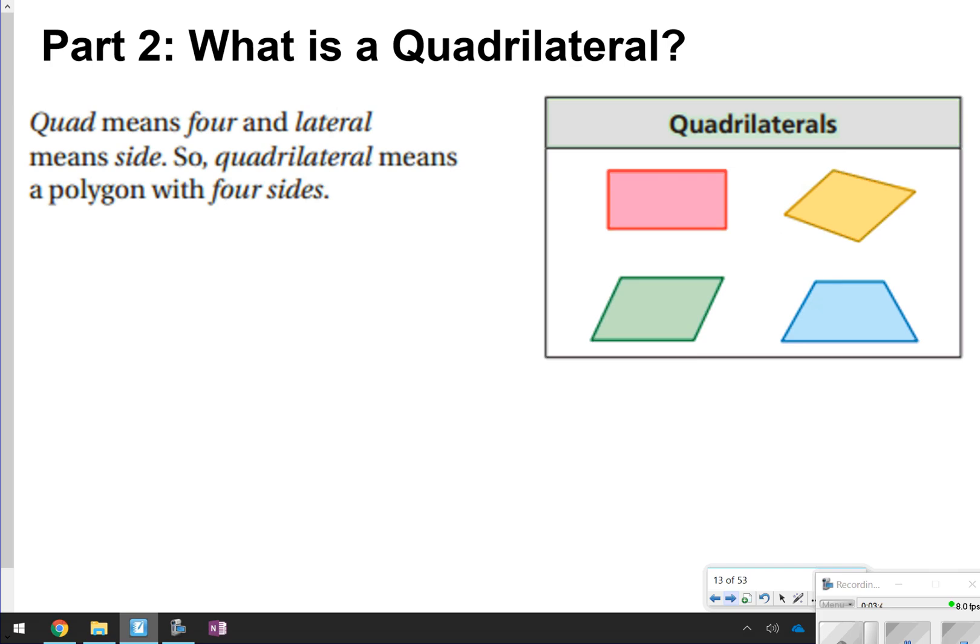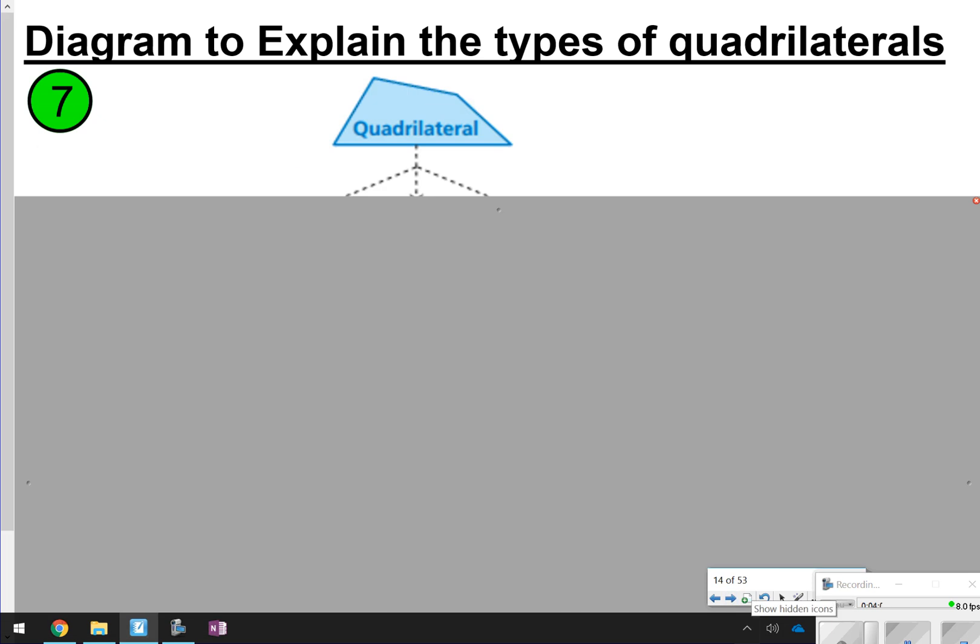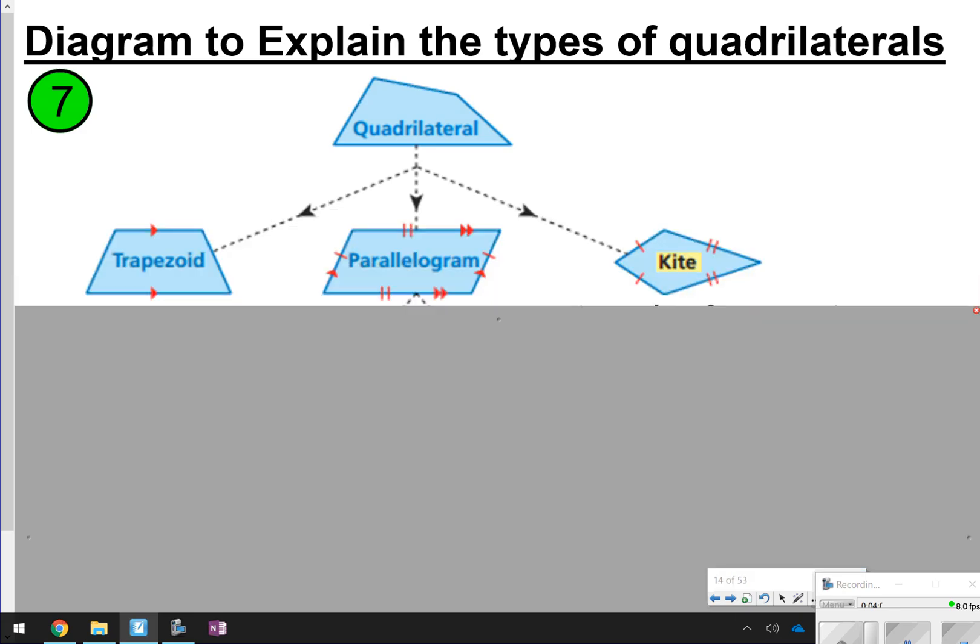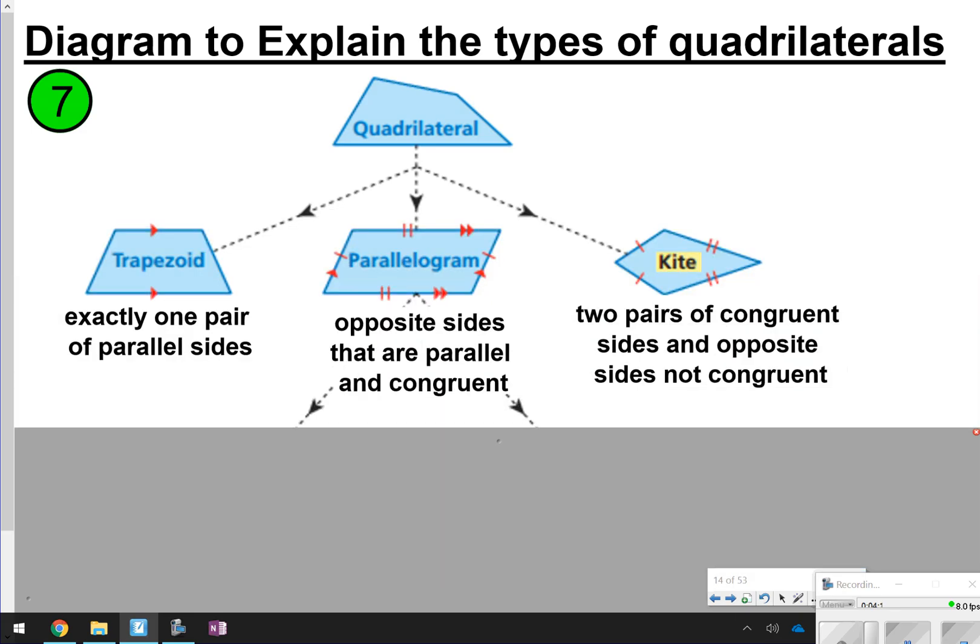The next part we're going to look at is quadrilaterals, and quadrilaterals means a four-sided figure. So what we're going to be doing is writing a flow chart of quadrilaterals. You are going to be writing down the entire flow chart and how each of the shapes are represented.